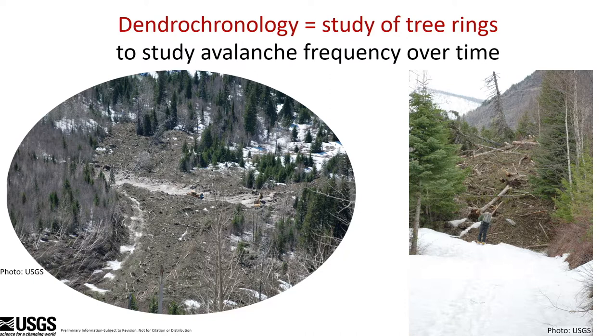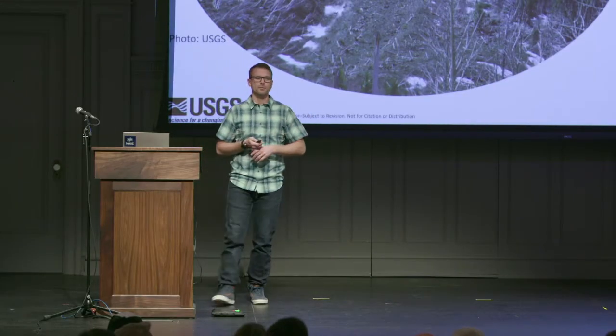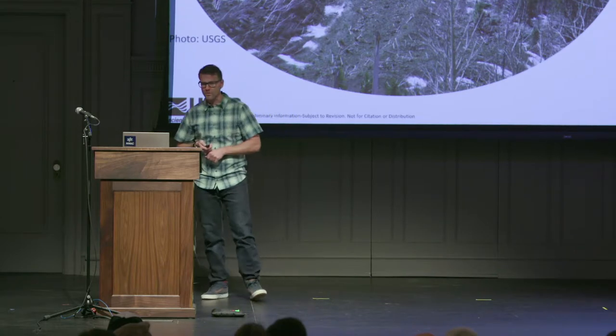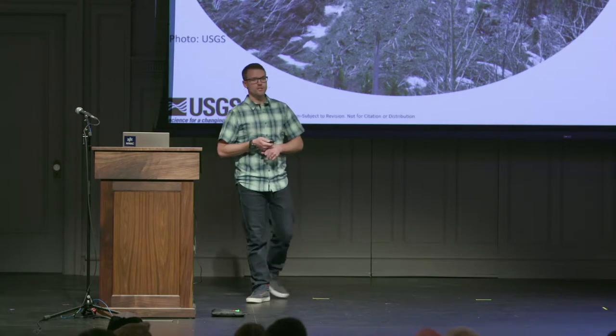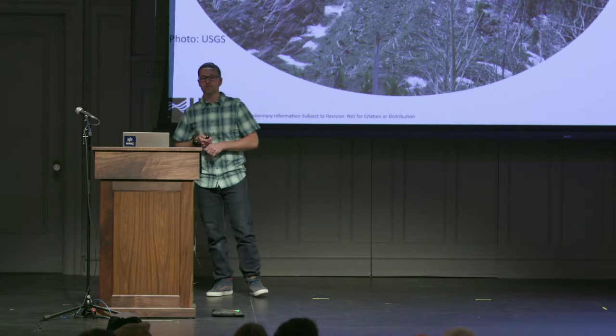People have used tree rings to study all sorts of things — from landslides, climate, looking at ring widths to find big snow years, low snow years, big precip years, temperature. Trees can actually tell us a lot about what's going on in the natural environment. Dendrochronology has been used to study avalanches for quite some time now. It's a pretty popular tool used around the world to look back in time. Our observational records are great, but they only go back so far. So we can use tree rings to send us further back in time, as a proxy for looking at avalanches way back in history when we just didn't have an observational record.